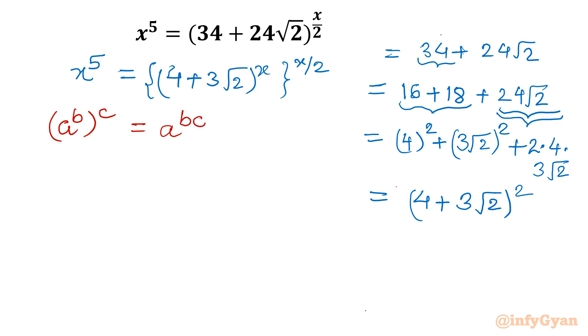So if I will apply the exponent property, see what will happen: x power 5 would be equal to 4 plus 3 square root 2. See it is whole square. I am writing x. 4 plus 3 square root 2 and power is we will multiply 2 and x, 2 will get cancelled. So what is left: x power 5 is equal to 4 plus 3 square root 2 whole power x.